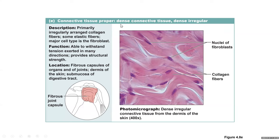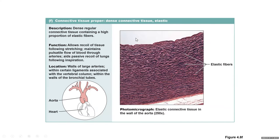Dense connective tissue — dense irregular: primarily irregularly arranged collagen fibers, some elastic fibers, and the major cell type is the fibroblast. Function: able to withstand tension exerted in many directions; provides structural strength. Location: fibrous capsule of organs, ends of joints, dermis of the skin, submucosa of the digestive tract. The superficial layer of the dermis contains areolar connective tissue, while the deep layer of the dermis is made of dense irregular connective tissue.